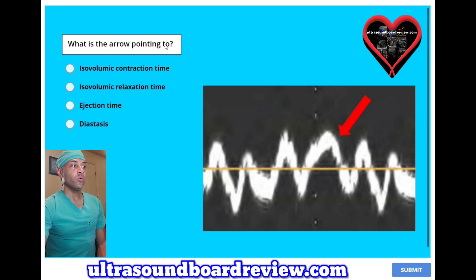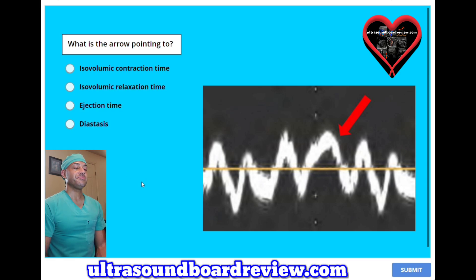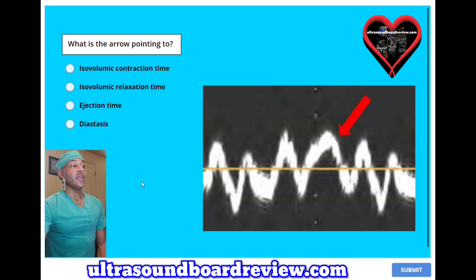What is the arrow pointing to? A, isovolumic contraction time. B, isovolumic relaxation time. C, ejection time. Or D, diastasis. The answer is C, ejection time.